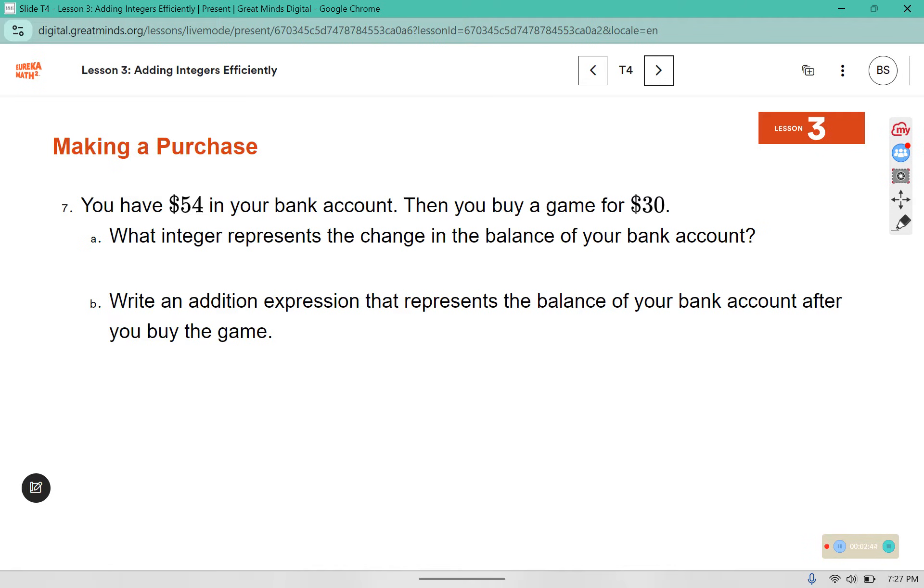Number 7. You have $54 in your bank account. Then you buy a game for $30. What integer represents the change in the balance of your bank account? If you buy a game, is your balance increasing or decreasing? You spent money, so that is a negative 30. An integer are just positive and negative whole numbers. Then write an addition expression that represents the balance of your account after you buy the game. You started with 54, but now you've decreased it by 30. You might be tempted to write this, but it does specify that you need an addition expression. So we need a plus and a negative integer rather than subtracting a positive integer.